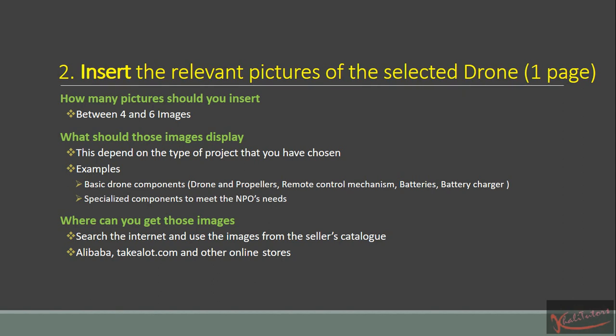Some drones have specialized components. You need to show those specialized components which will most likely address the question or meet the NPO's needs. Where can you get those images? You can get the images from the supplier's catalog. Most supplier catalogs have all the images that you need. When you do your research, you'll identify a particular drone for a particular task. Like in a journal that addresses a particular issue, they'll most likely mention the type of drone they use — the model number and the supplier.